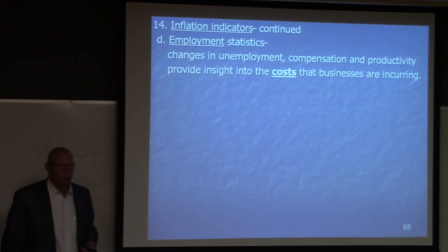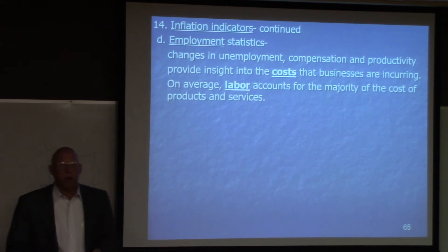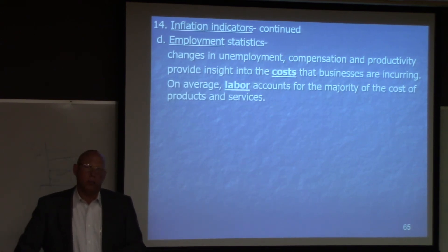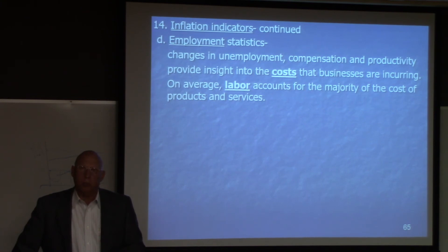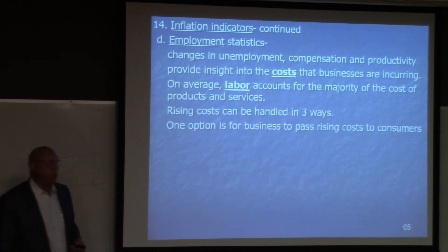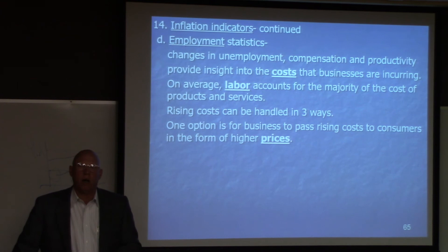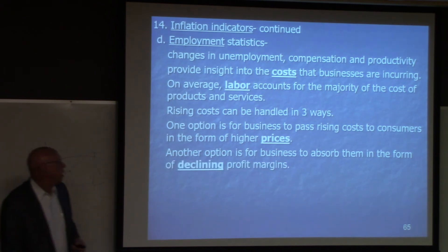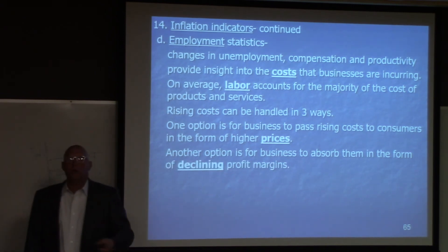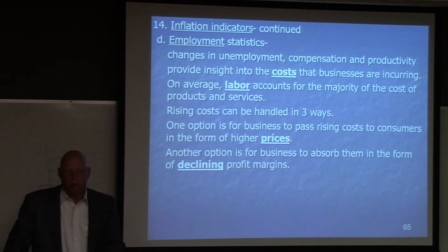This gives us an idea of the costs that businesses are incurring. Labor accounts for the majority of costs of products and services — raw materials, labor, and overhead — and labor costs are the majority. So if wages are going up, that means prices will be going up, otherwise businesses will lose profit. Rising costs can be handled in three ways: one option is for businesses to pass these rising costs along to consumers in the form of higher prices — that's inflation. Another option is for businesses to absorb them in the form of declining profit margins, where costs go up but you don't raise prices and your profit margins go down.